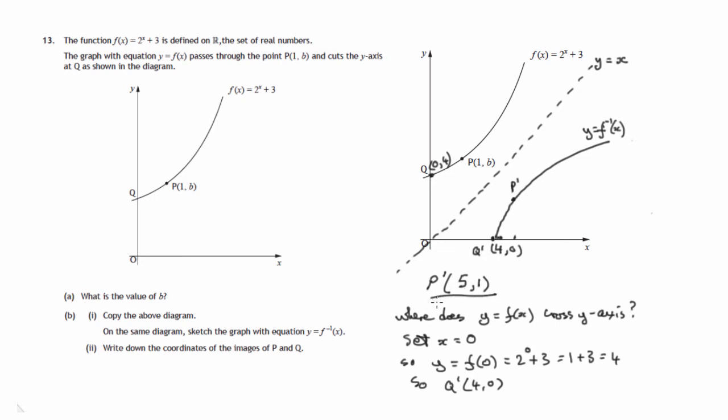So these are the two answers we're after. p dashed is (5, 1), image of p. p ends up at p dashed, which is (5, 1). And q ends up at q dashed, which is (4, 0).